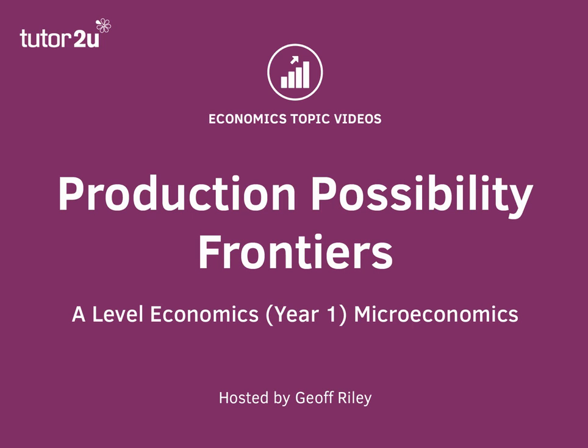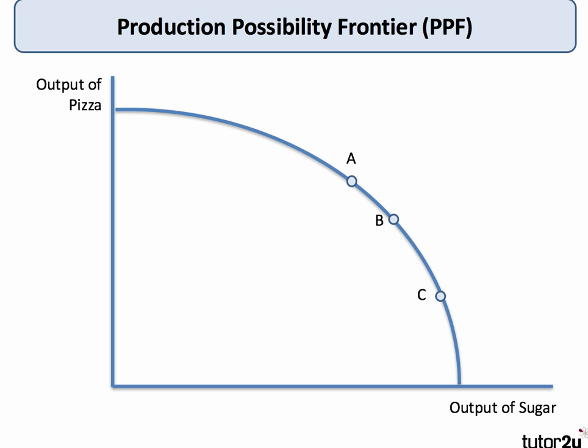Hi there. This is a topic video for Year One Microeconomics, focusing on the production possibility frontier. The PPF is a combination of two products — goods or services — that shows the maximum output combinations using all available factors of production efficiently.